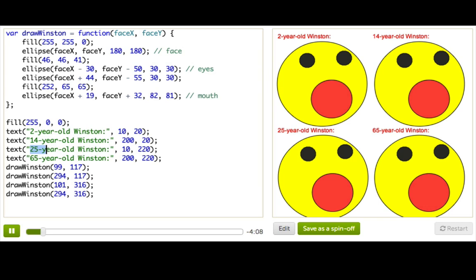So to warn Winston about how bad donuts are for him, I want to modify this program to show how many donuts he's eaten total at each point in his life.